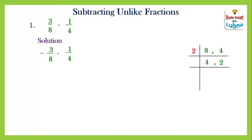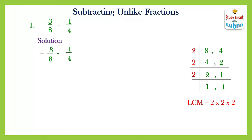Again we have four and two. Dividing by two: four divided by two equals two, and two divided by two equals one. Now we have two and one. Two is again divisible by two, so two divided by two equals one. The prime factors of eight and four are two, two, and two. Multiplying these: two twos are four, and four twos are eight. So the LCM is eight.